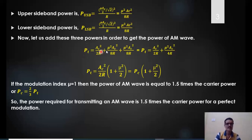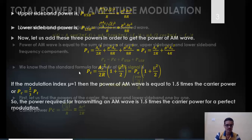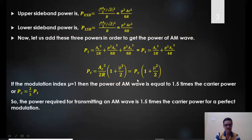The total power is the sum of all three: PT = AC²/2R + μ²AC²/8R + μ²AC²/8R, which simplifies to AC²/2R + μ²AC²/4R. Factoring out AC²/2R gives PT = (AC²/2R)(1 + μ²/2). Since AC²/2R is the carrier power PC, the standard equation for total power in amplitude modulation is PT = PC(1 + μ²/2).